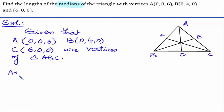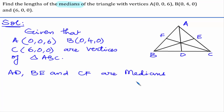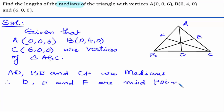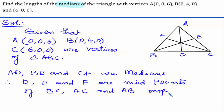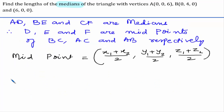Here is the triangle ABC. AD, BE, and CF are the medians. Using the midpoint formula, let us find out the midpoints D, E, and F.